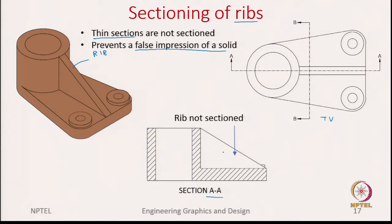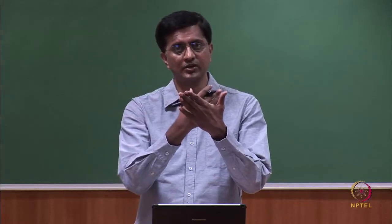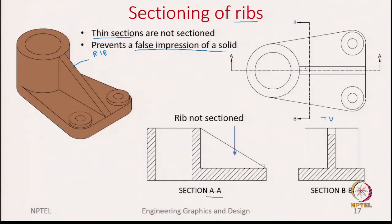Here is the catch. In section BB, we are cutting the rib but not in a thin cross-section fashion - we are cutting at a different section where there is much more thickness in front of and behind the cut line BB. In that case, you do show the rib as sectioned with hatching. The reason is that there is a lot of material behind the direction of cut line BB. In contrast, section AA cuts where the thickness of the material is very less, so we avoid hatching to prevent confusion.